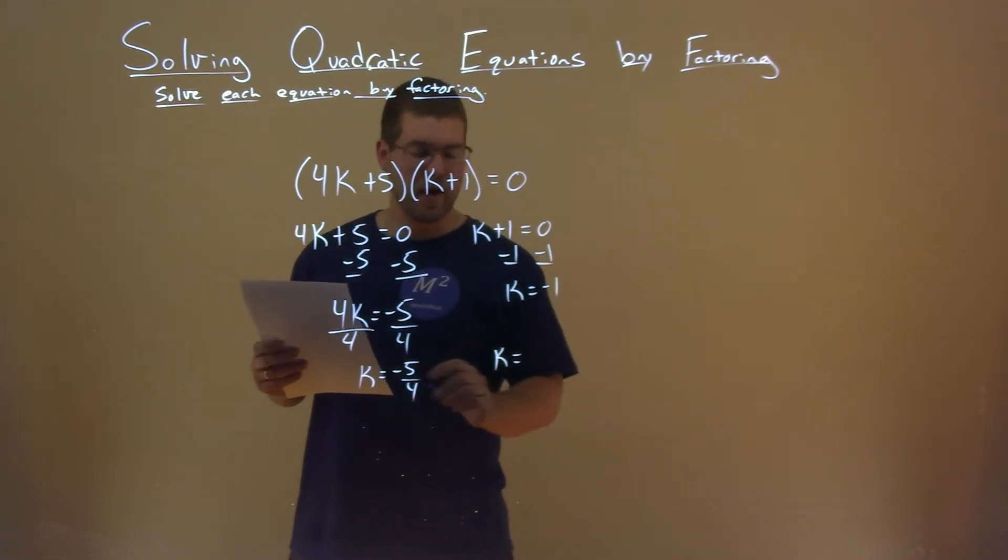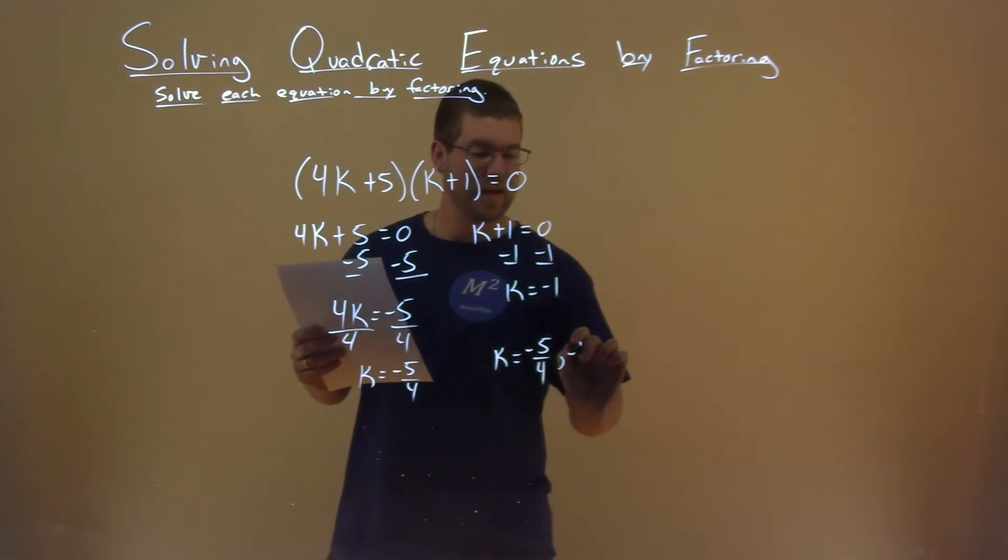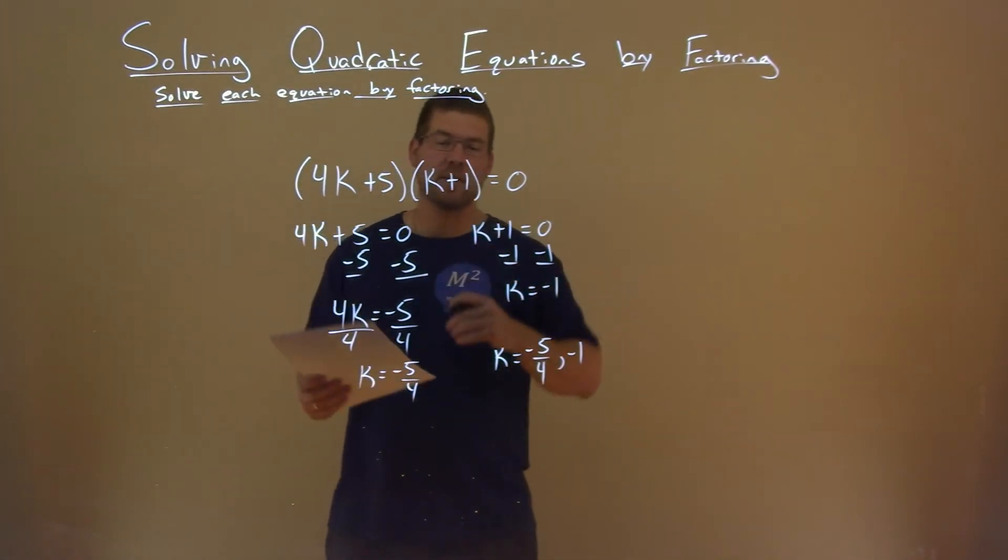And so, our two values for k are k equals negative 5 fourths and negative 1. And so, that is our final answer.